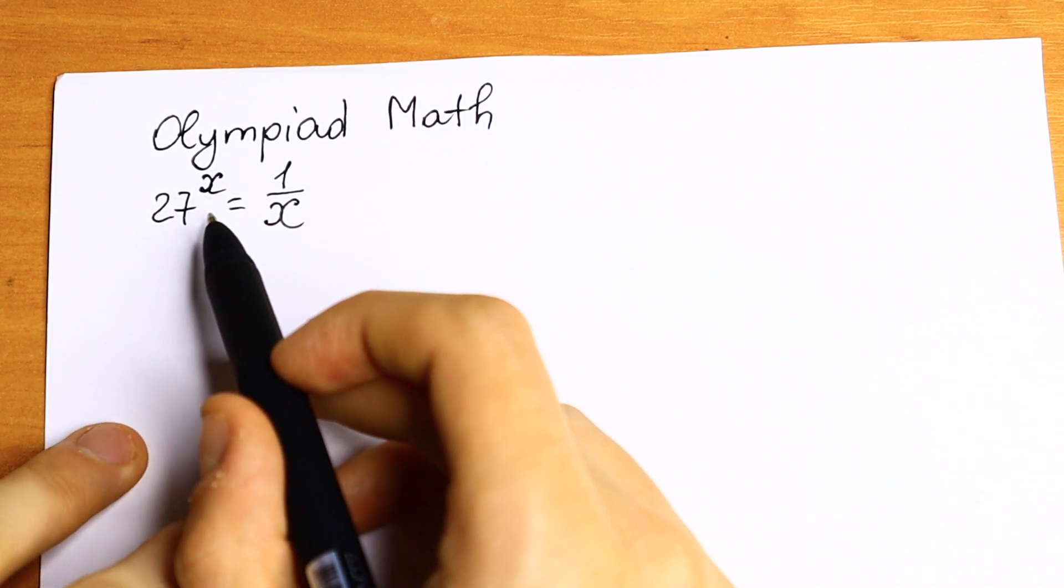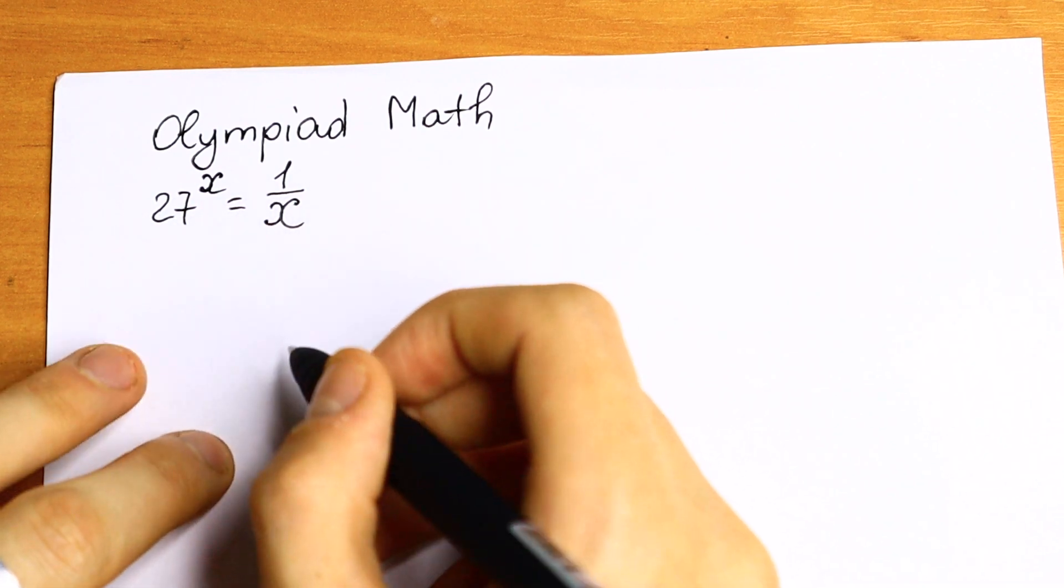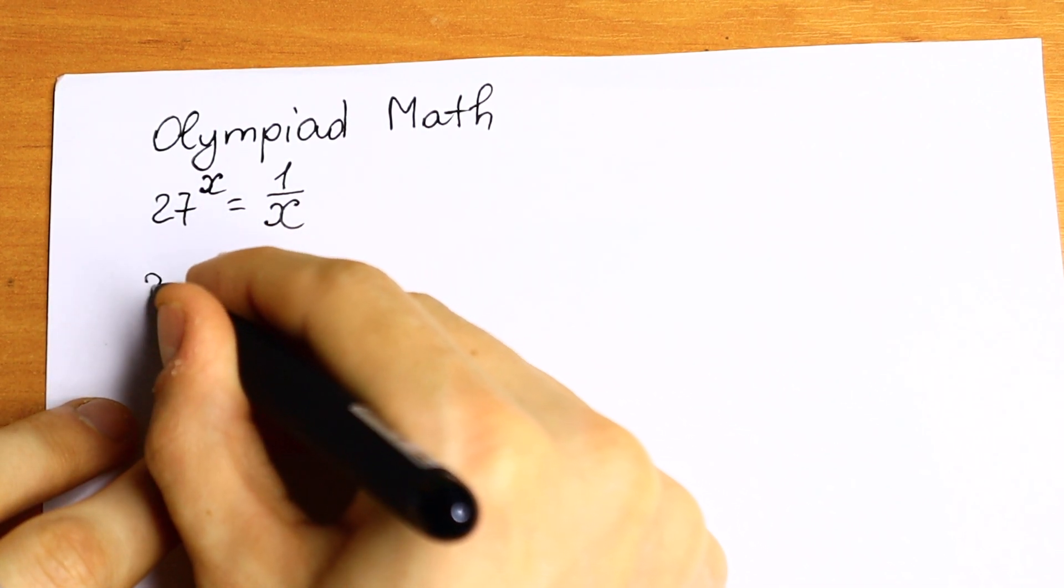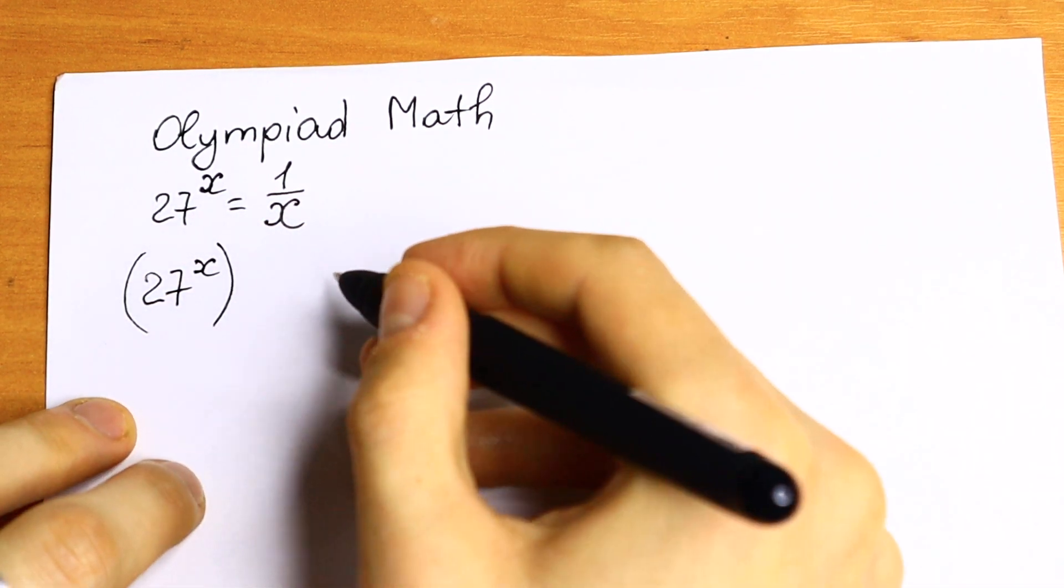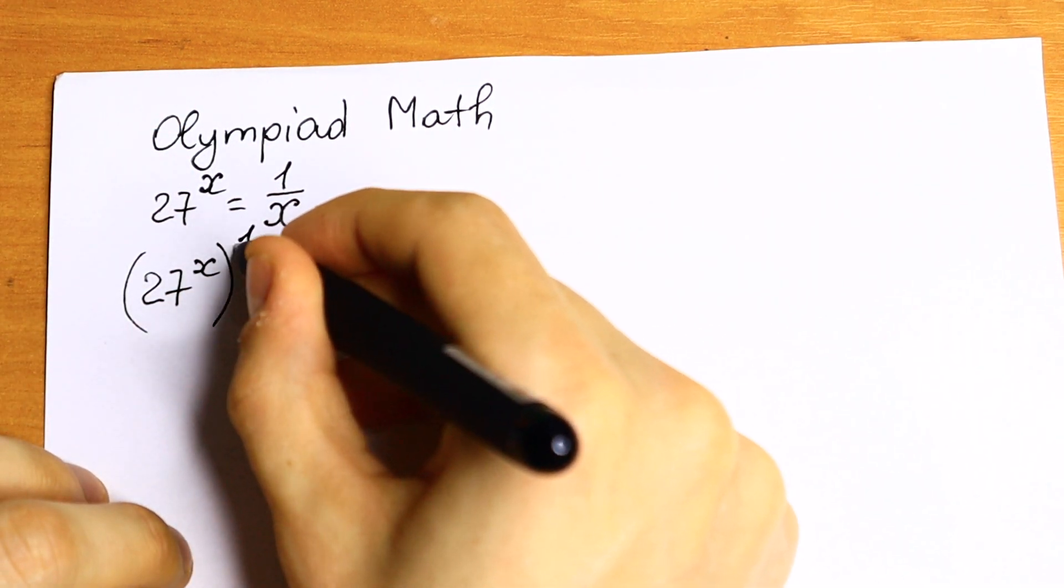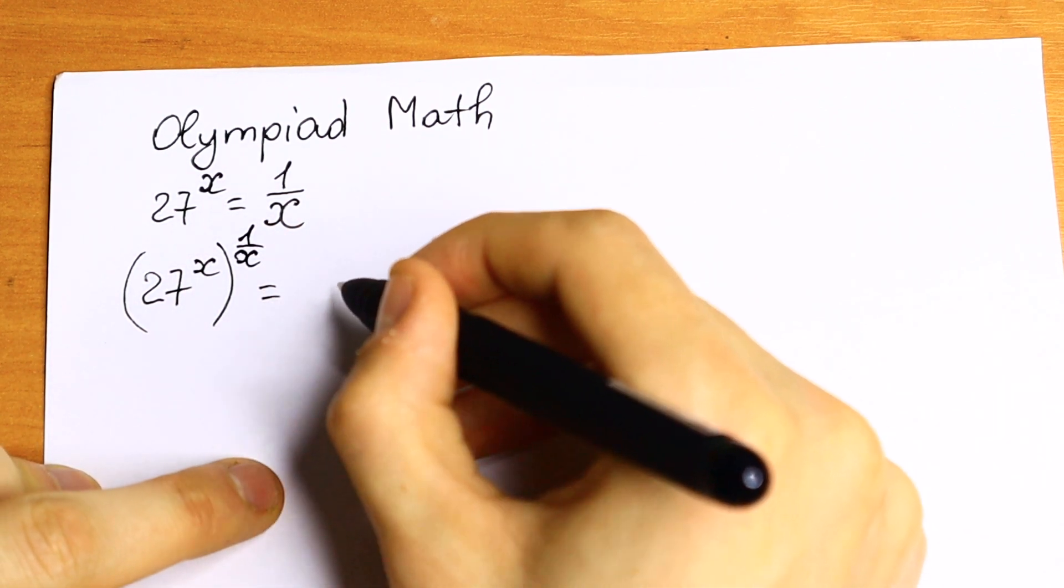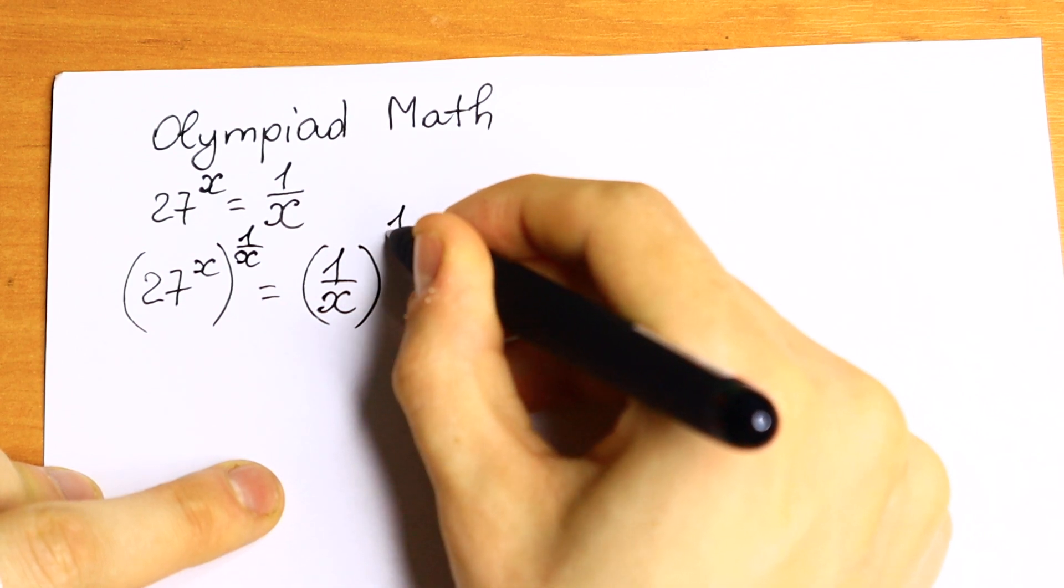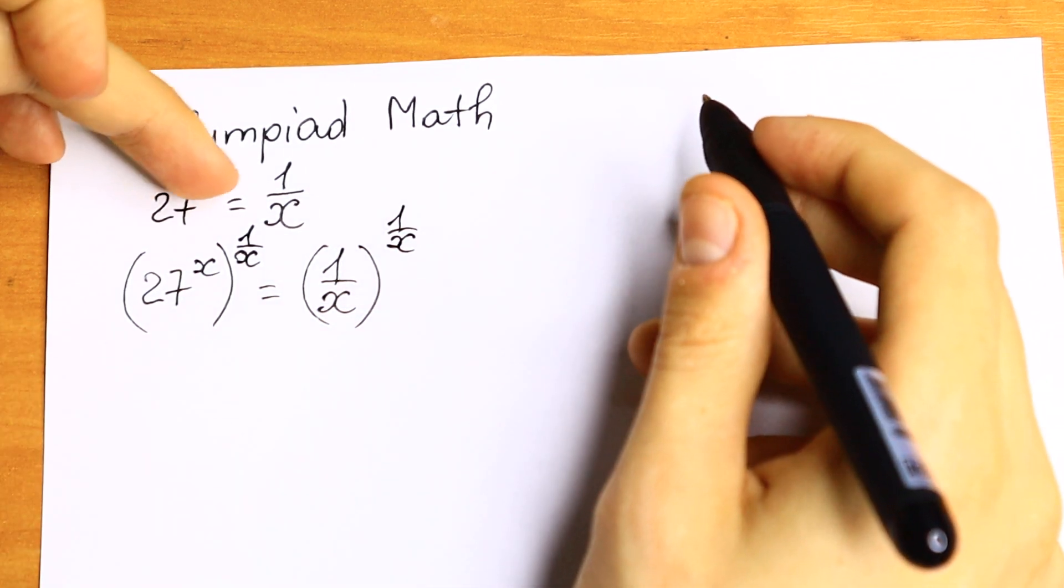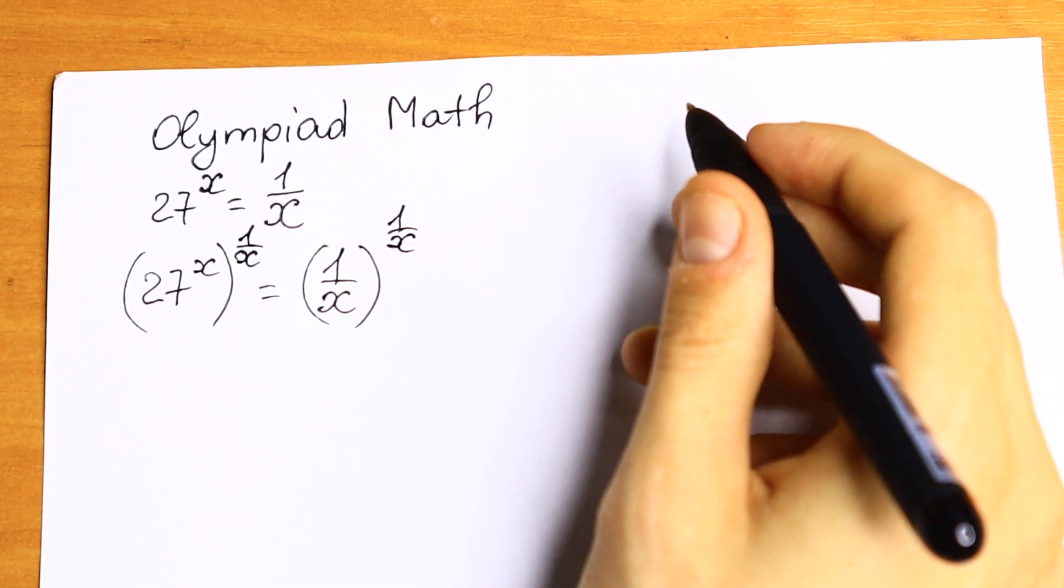So first of all, let's raise both sides to the power 1 over x. What we will have? We will have 27 to the power x on the left, and we raise this to the power 1 over x. And we of course raise the right side, so 1 over x we raise to the power 1 over x as well. As you can see we just raise both sides to the power 1 over x.